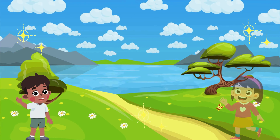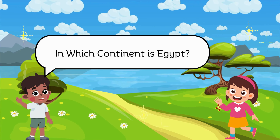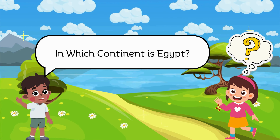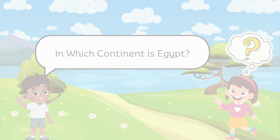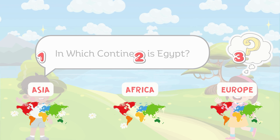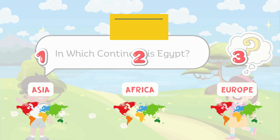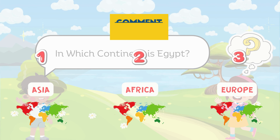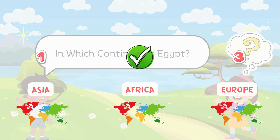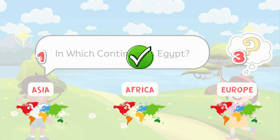Question seven. What is the area of this country? Help Berlin by choosing the correct answer! Congratulations! This is the correct answer!